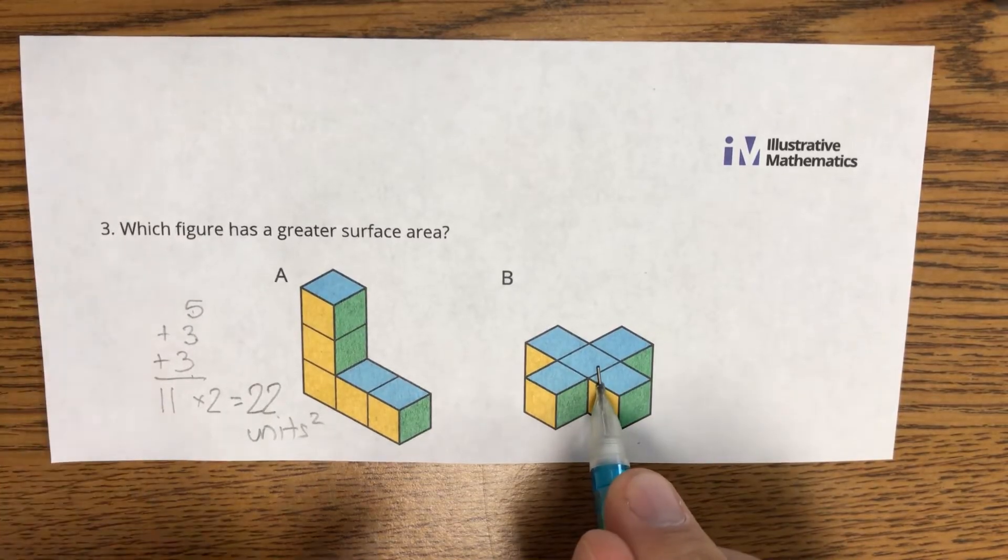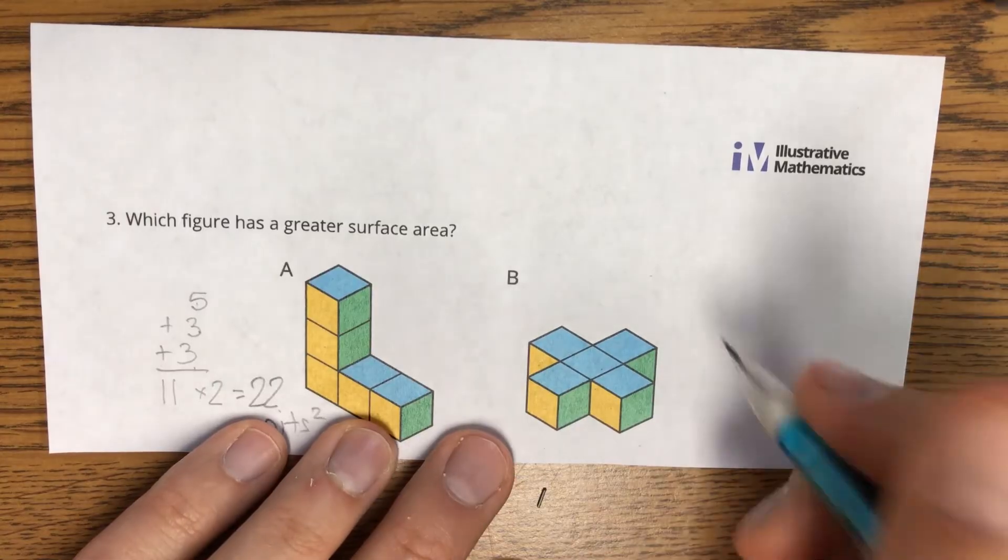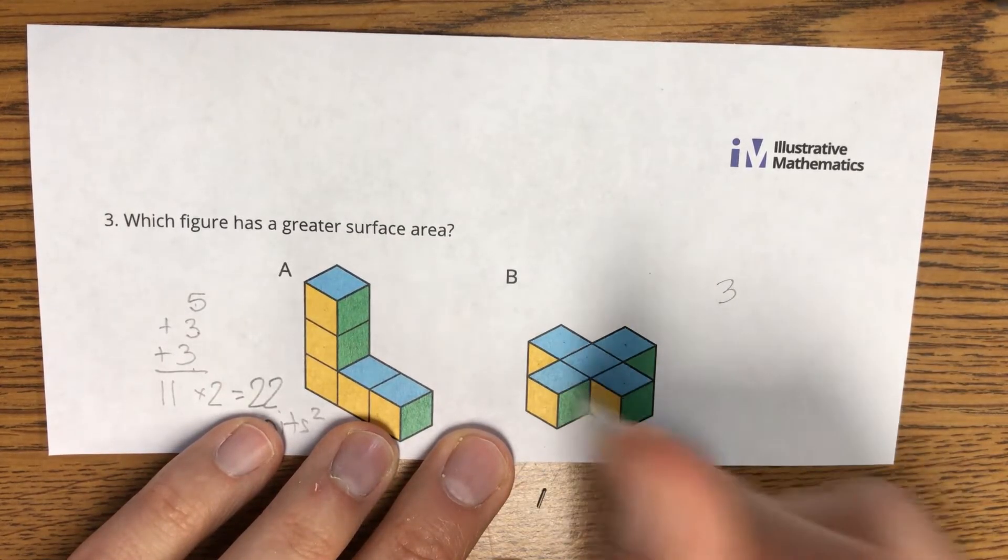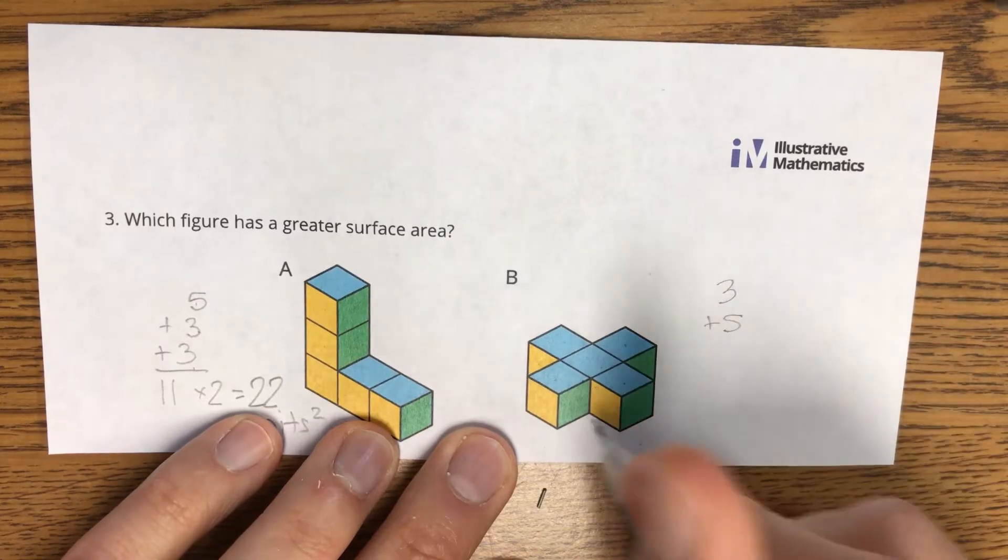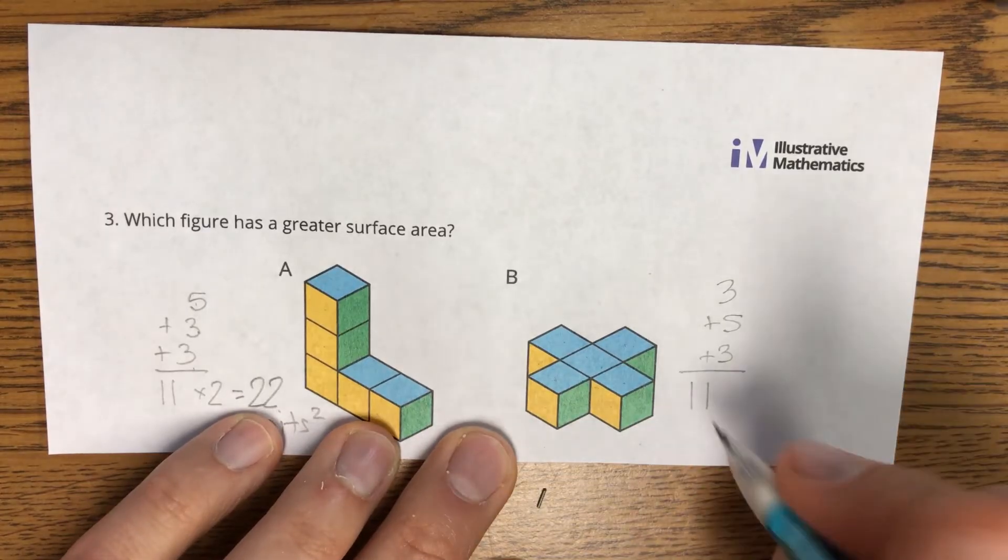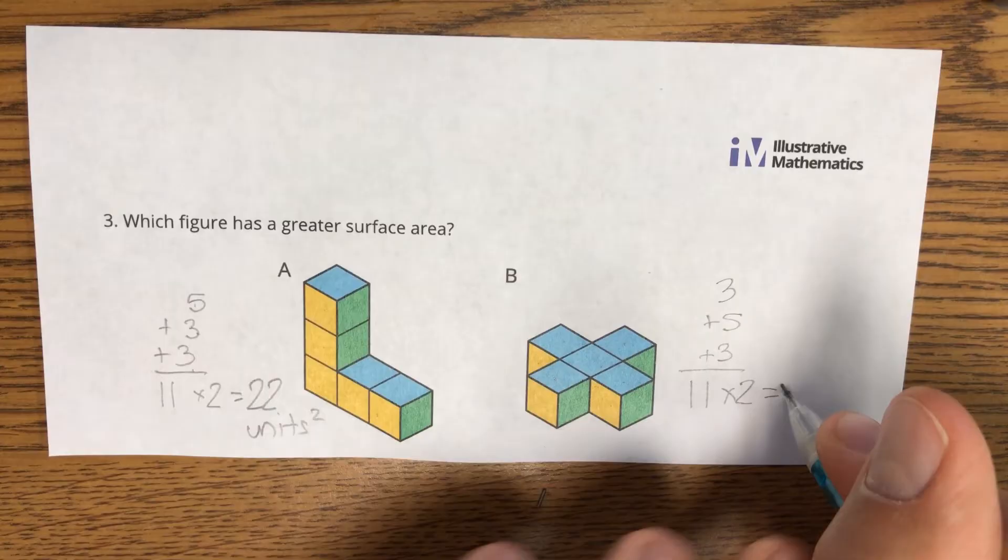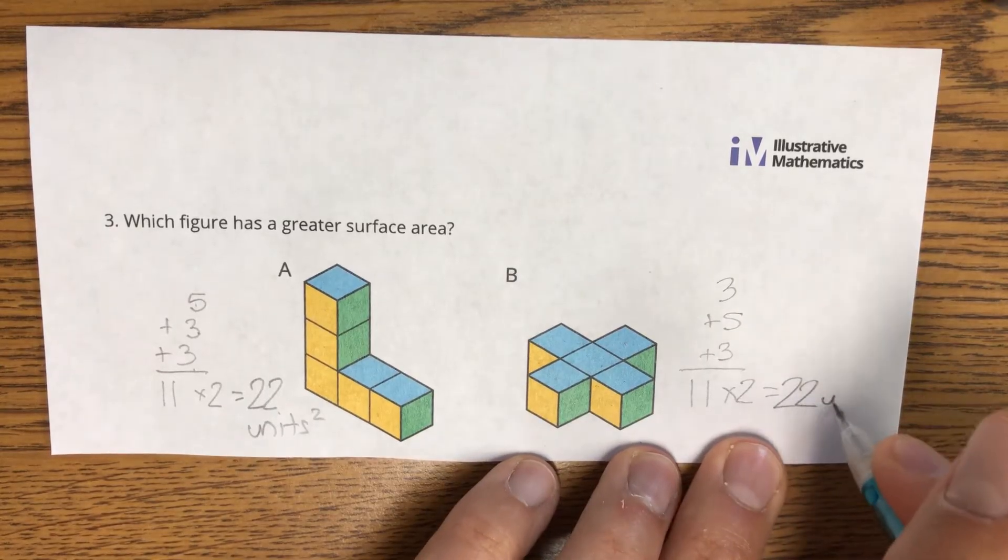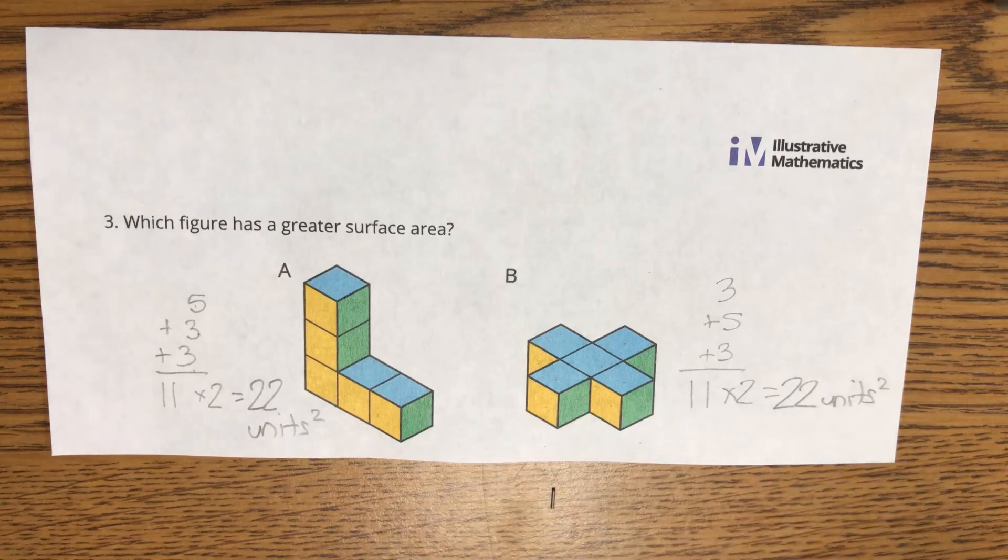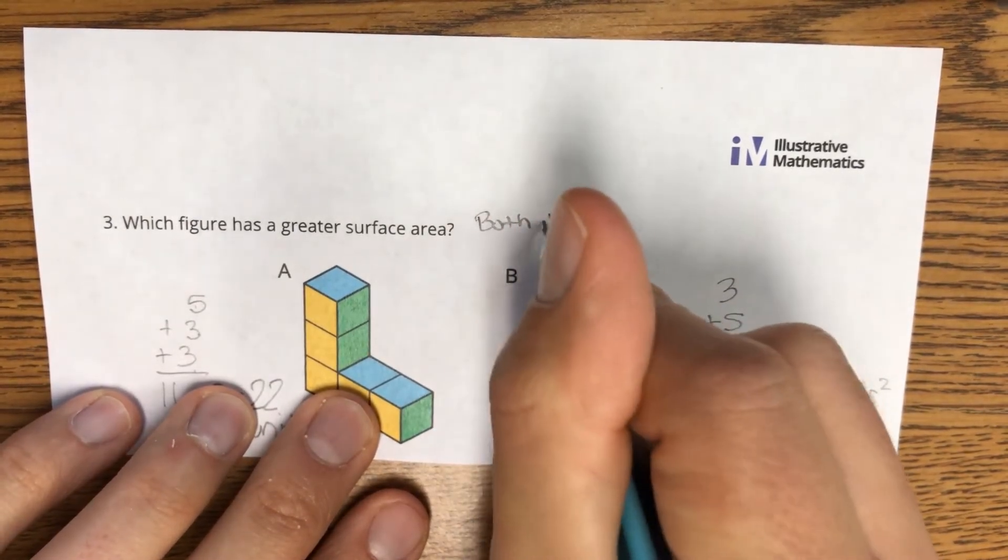And B. Let's look at the yellows. We see one, two, three of them. The blues, one, two, three, four, five. And the greens, one, two, three. That also adds up to 11. And when I multiply that by two to get the other half I cannot see, I once again get 22 square units. So which figure has the greater surface area? They are both the same.